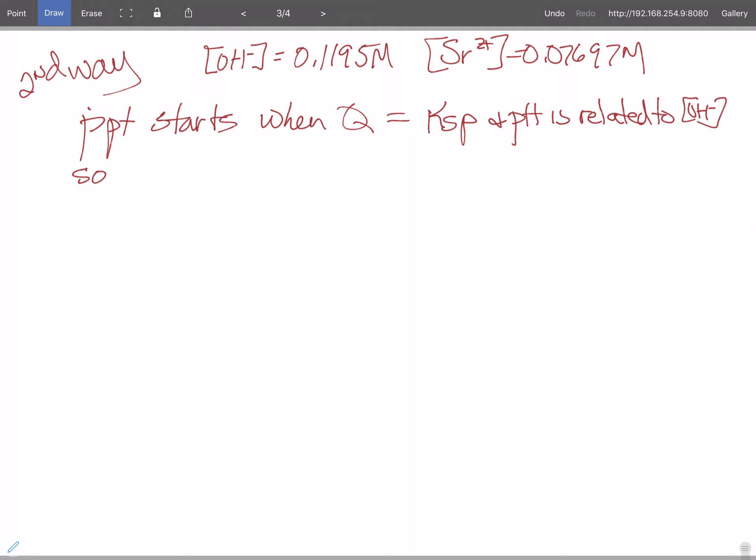So basically, what we have is Ksp is equal to the strontium 2+ times the hydroxide ion concentration squared. So we know our Ksp, that's 3.2 times 10 to the minus 4. We're given our strontium 0.0769, and we're looking for our hydroxide.